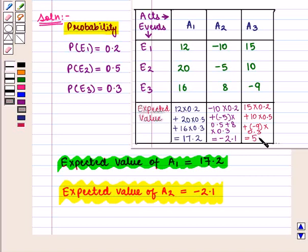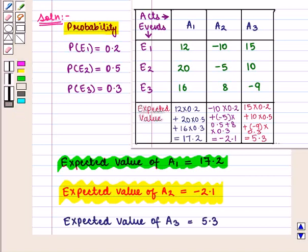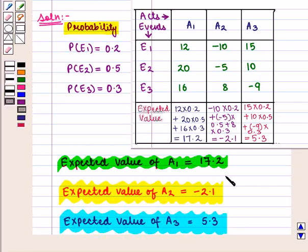That is expected value of act A3 is equal to 5.3. So here we see that the expected value of act A1 is maximum.